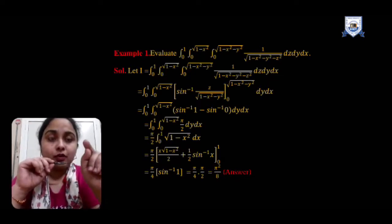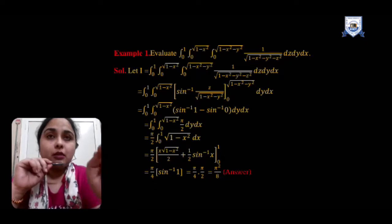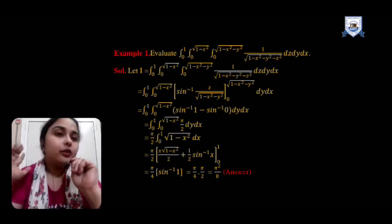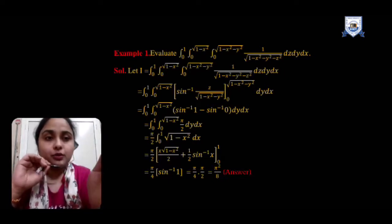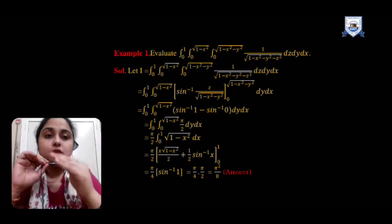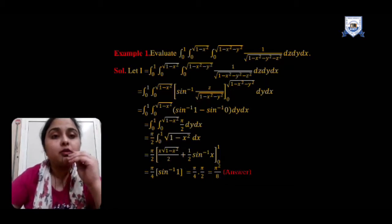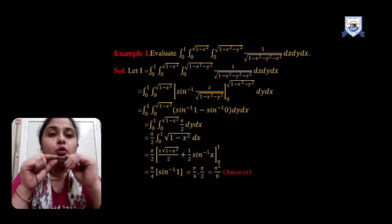Using the formula for the integral of 1 over √(a² − x²) = sin⁻¹(x/a), and comparing, we get the result sin⁻¹(z / √(1 − x² − y²)) evaluated over the limit 0 to √(1 − x² − y²). Putting the upper and lower limits: sin⁻¹(1) − sin⁻¹(0) = π/2 − 0 = π/2. So π/2 is the result. Now integrating with respect to y over the single-variable limit 0 to √(1 − x²).